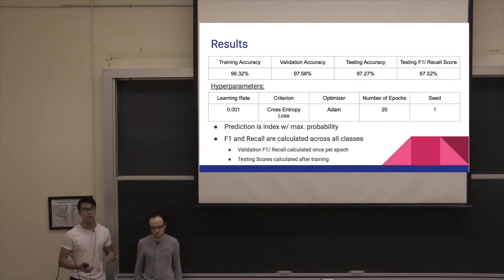The hyperparameters were largely taken from previous assignments, nothing special there. The prediction was simply taken as the maximum index of the output vector with maximum probability, and recall scores were calculated across all classes once every single epoch.